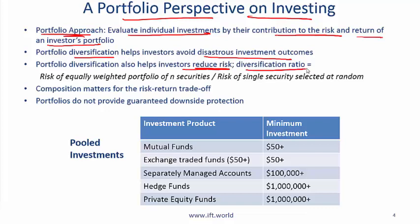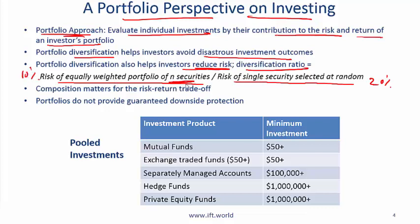A measure sometimes mentioned is the diversification ratio, which is the risk of an equally weighted portfolio of n securities divided by the risk of a single security selected at random. For example, if five securities each have a risk of 20% and the overall portfolio risk is 10%, the ratio is 10% over 20%, which equals 0.5.